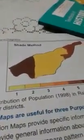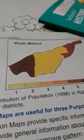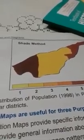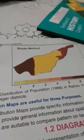In this example, different shades are used to show the population of Rahim Yar Khan, Bahawalpur, and Bahawal Nagar. Here we use shades to show the population density.